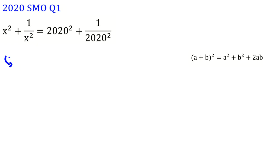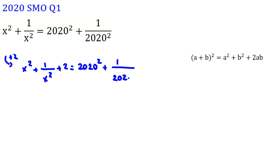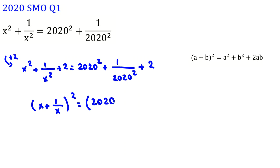So if we add 2 to both sides, it will be x squared plus 1 over x squared plus 2 equals 2020 plus 1 over 2020 plus 2. We've added 2 to both sides. Using this identity, it will be x plus 1 over x, all squared, equals 2020 plus 1 over 2020, all squared.